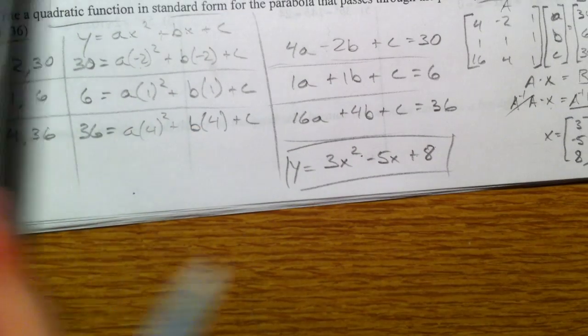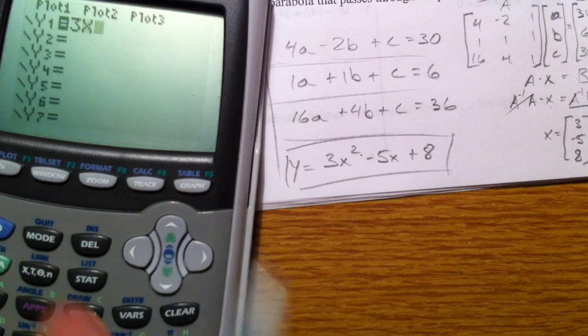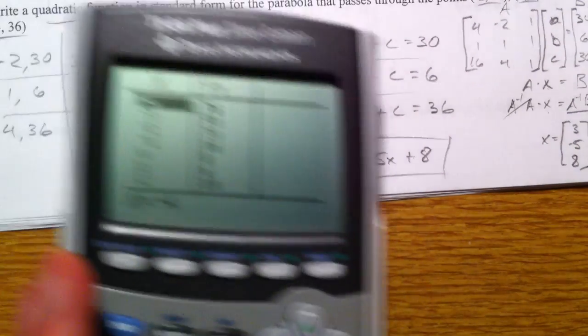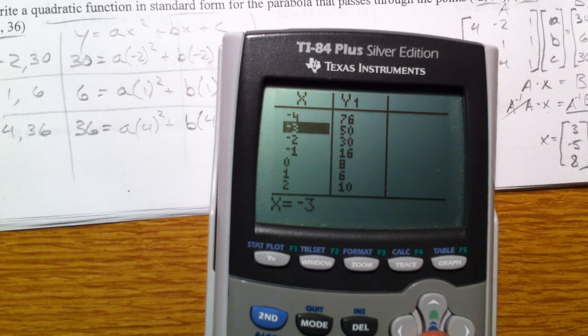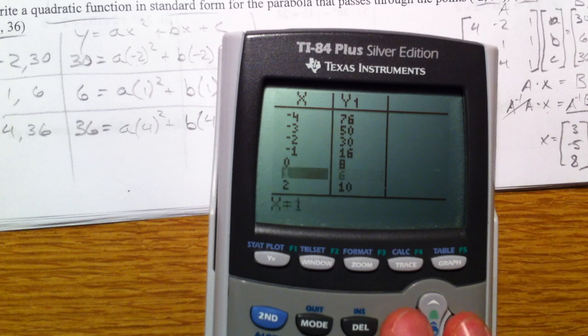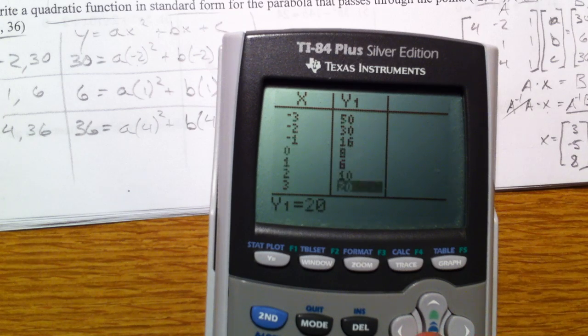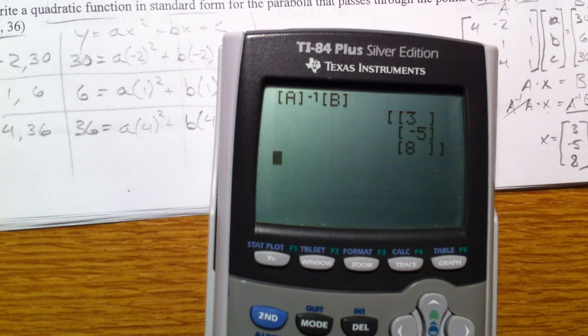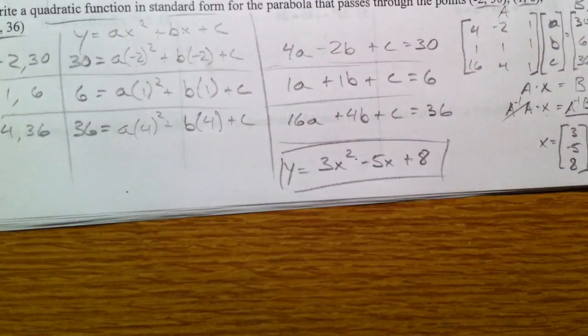And so just to double check, 3x squared minus 5x plus 8. Double check that your, all your equations are in there. Negative 2, 30, 1, 6, and 4, 36. And so that's how you know that all three of those equations are in there.